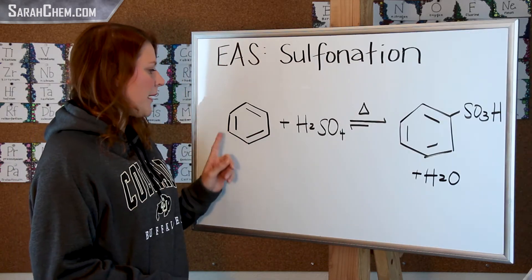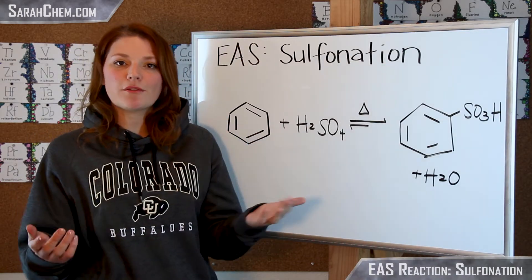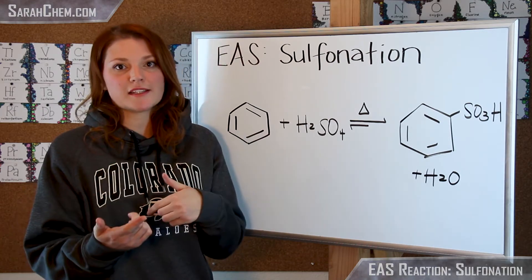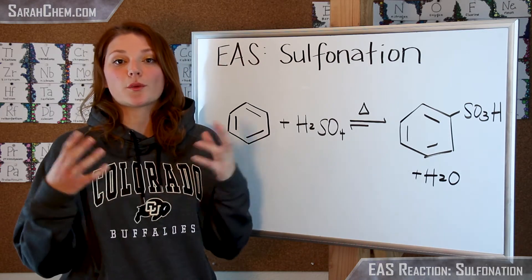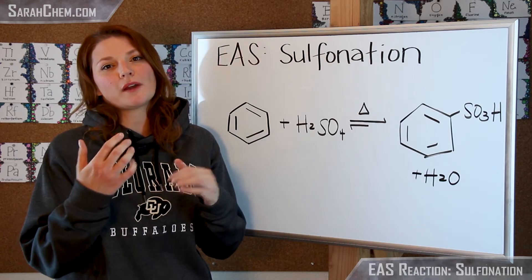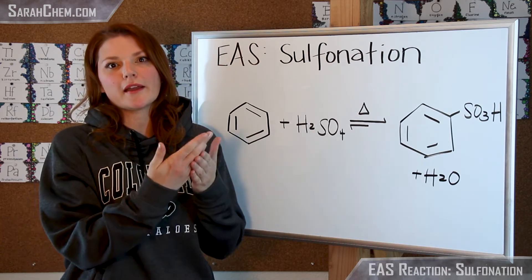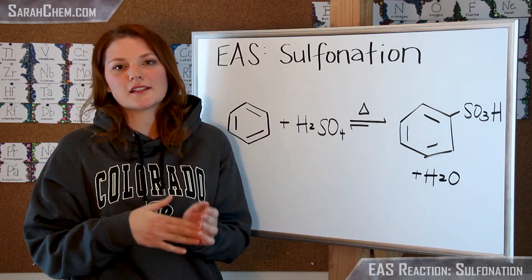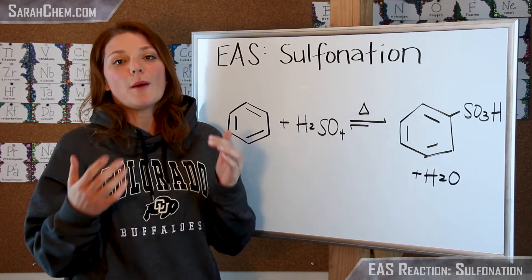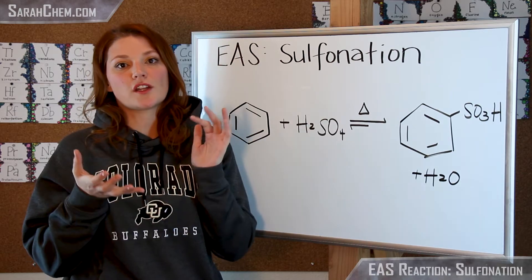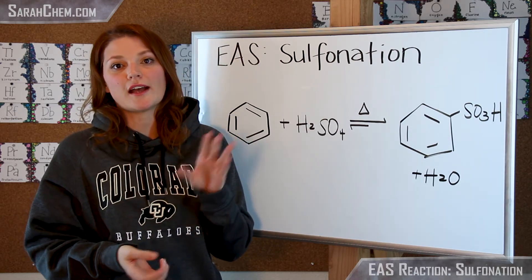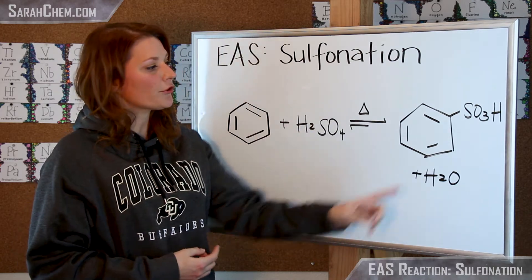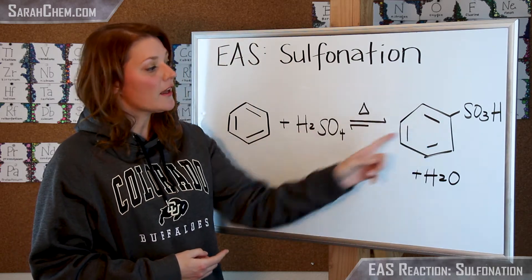We have our aromatic compound, which is benzene, and we know that aromatic compounds are particularly stable. So whenever we're doing these kinds of reactions, we need to make sure that we've got a really great electrophile that would actually stimulate the benzene to come and participate in the reaction. In this case, we have sulfuric acid, which is not a great electrophile, but if you have a really concentrated solution, you can have two sulfuric acids react with one another to generate the necessary electrophile in order to sulfonate our benzene ring.